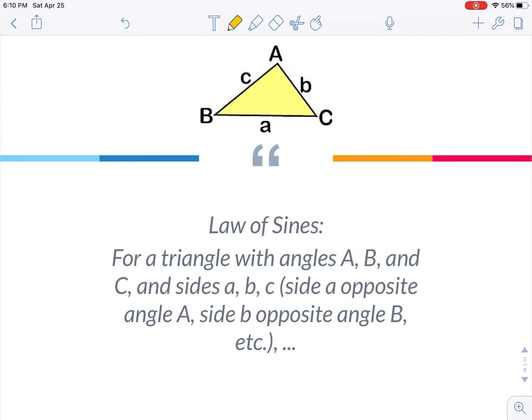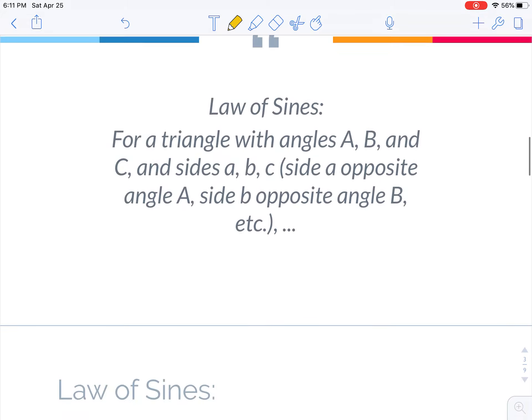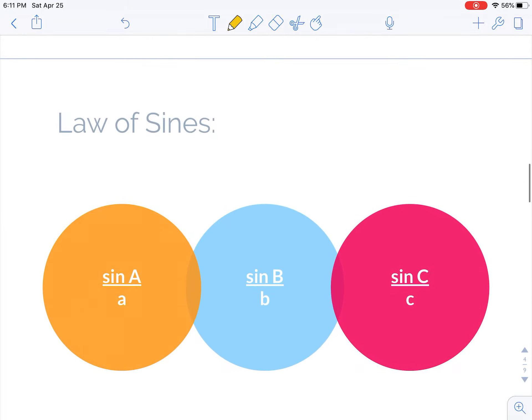Which, if you want to sound fancy, says that for a triangle with angles A, B, and C and sides A, B, and C, side A opposite angle A, side B opposite angle B, etc. Sine A divided by A equals sine B divided by B, which equals sine C divided by C. And I can flip these, but if I flip one, I have to flip all of them.